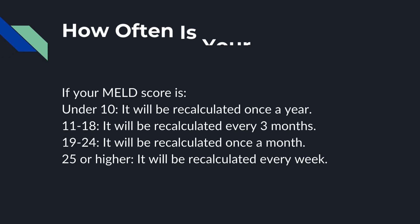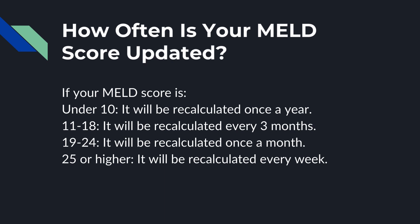How often is your MELD Score updated? If your MELD Score is under 10, it will be recalculated once a year. 11 to 18, it will be recalculated every 3 months. 19 to 24, it will be recalculated once a month. 25 or higher, it will be recalculated every week.